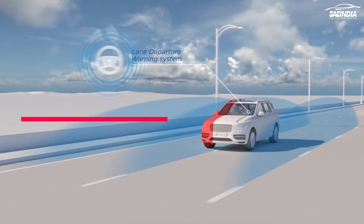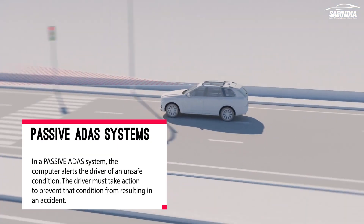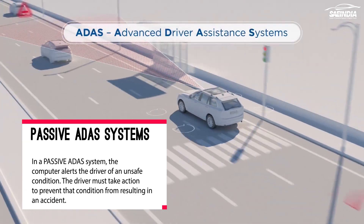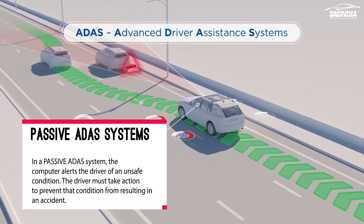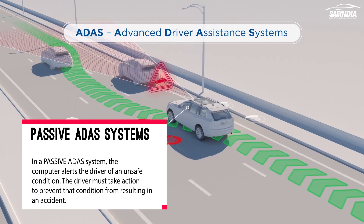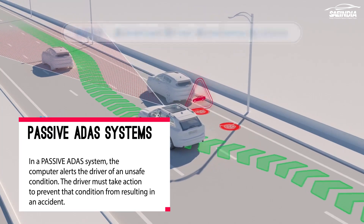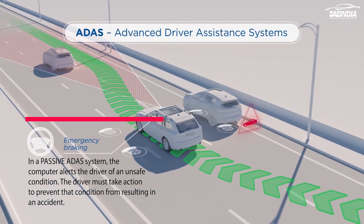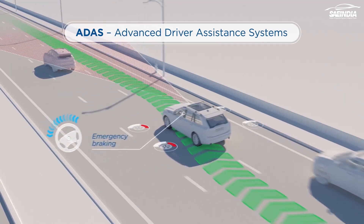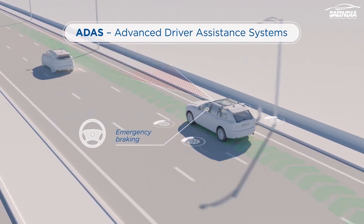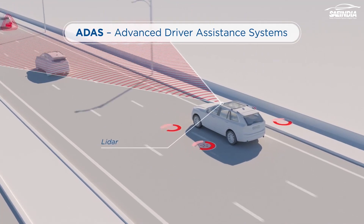Passive ADAS system functions. In a passive ADAS system, the computer alerts the driver of an unsafe condition. The driver must take action to prevent that condition from resulting in an accident. Typical alert methods may include sounds and flashing lights, or physical feedback — for example, a steering wheel vibrates to warn the driver in case of danger.